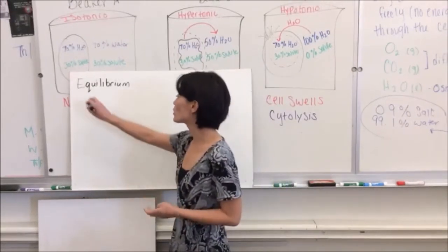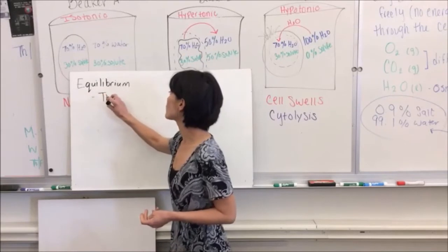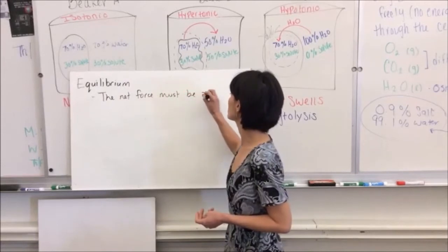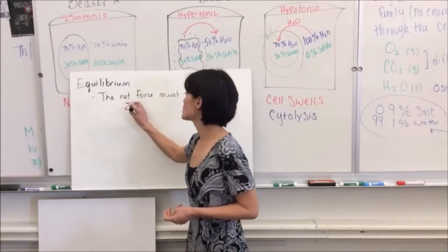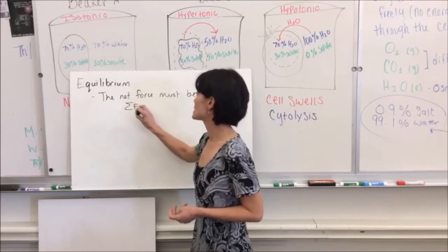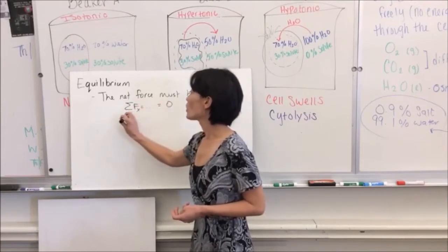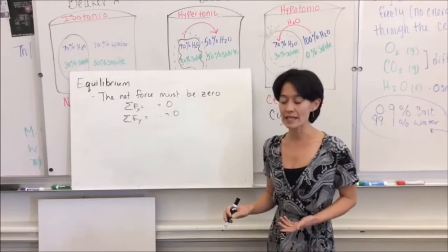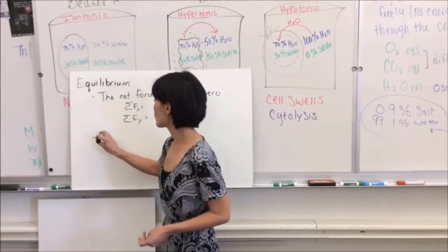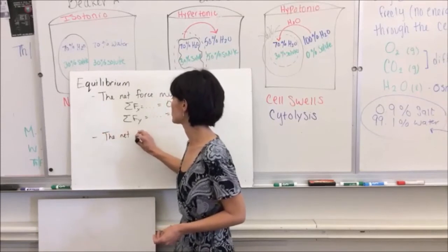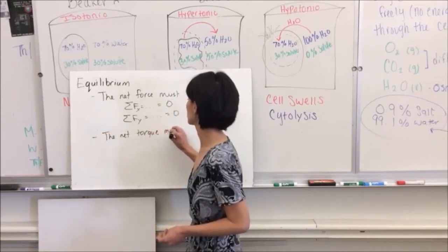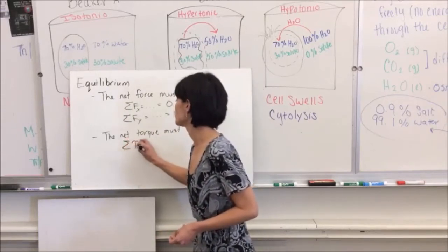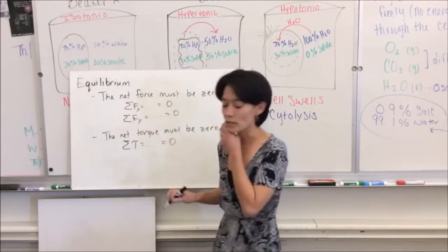There are two things that are prerequisites for equilibrium. The first is that the net force must be zero - whatever forces we might have in the x must add up to zero, and whatever forces we might have in the y direction must add up to zero. Now that something can be rotating, we also have this requirement that the net torque must be zero.